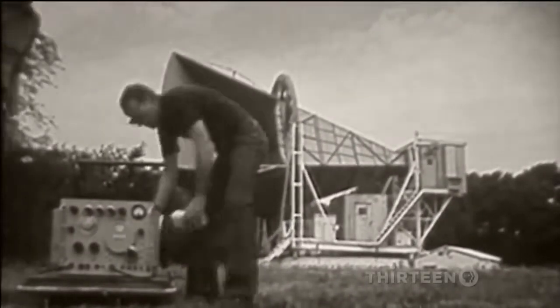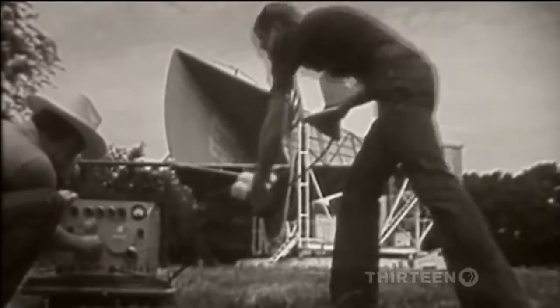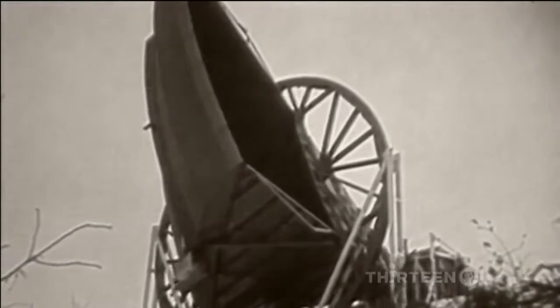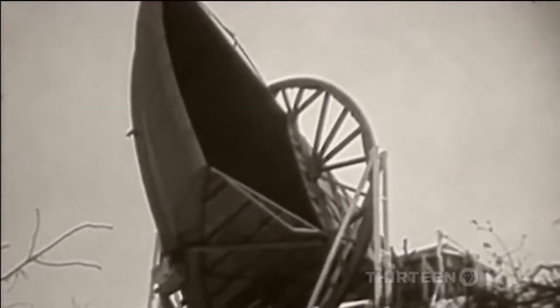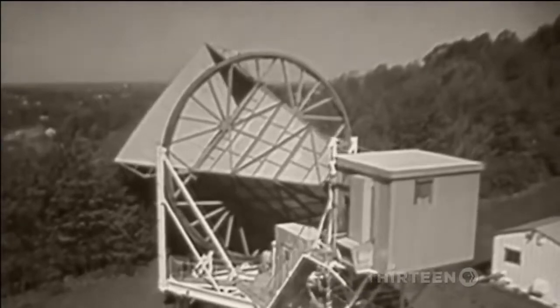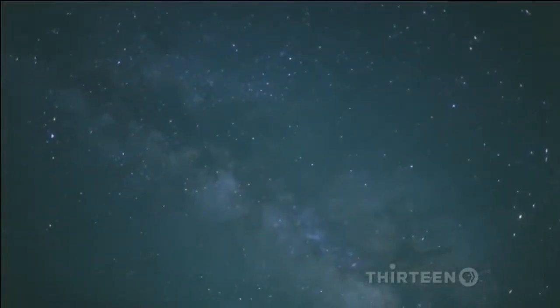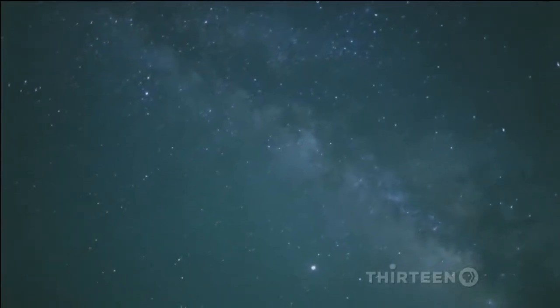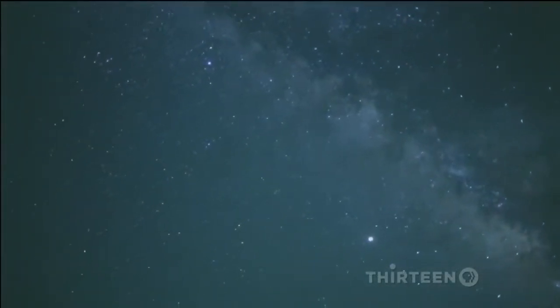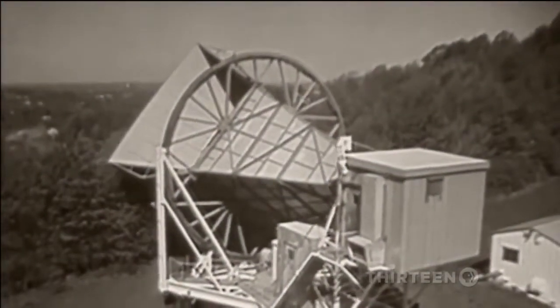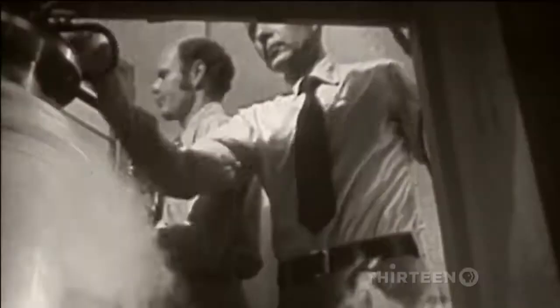1964. Astronomers Arno Penzias and Robert Wilson are working with a new radio telescope. Its giant antenna enables them to measure microwaves and radio waves in space in the form of heat. They expect the stars of our Milky Way to emit a faint glow. But when they point their antenna to empty space, where there should be nothing at all, they discover something very unusual.